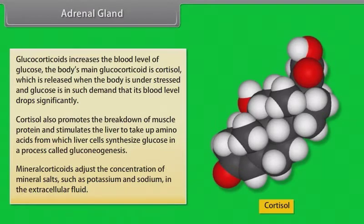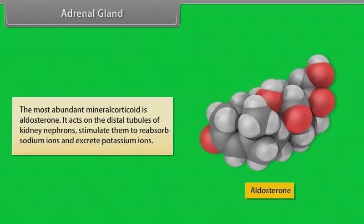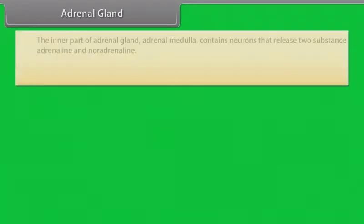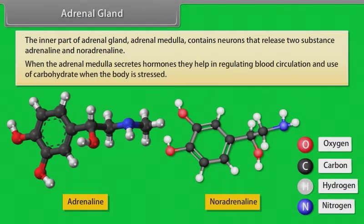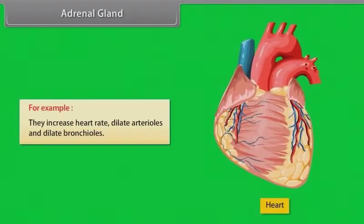Mineralocorticoids adjust the concentration of mineral salts. They act on the distal tubules of kidney nephrons, stimulating them to reabsorb sodium ions and excrete potassium ions. The inner part of the adrenal gland, the adrenal medulla, contains neurons that release two substances: adrenaline and noradrenaline. When the adrenal medulla secretes these hormones, they help in regulating blood circulation and use of carbohydrates when the body is stressed — for example, they increase heart rate, dilate arterioles and dilate bronchioles.